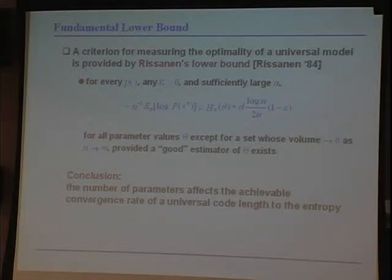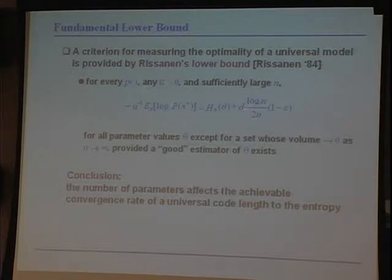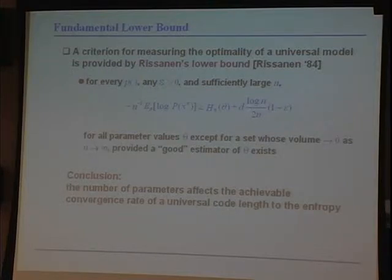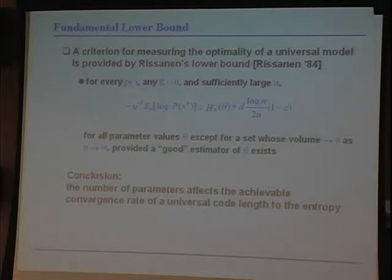There is a fundamental lower bound — a generalization by Rissanen of the entropy bound in traditional Shannon theory — which tells you that a universal code cannot converge to the entropy at an arbitrary speed. The speed depends on the number of parameters. The more parameters you have, the slower your convergence to the entropy. This formalizes the trade-off: more parameters means a better optimum, but slower convergence to it.